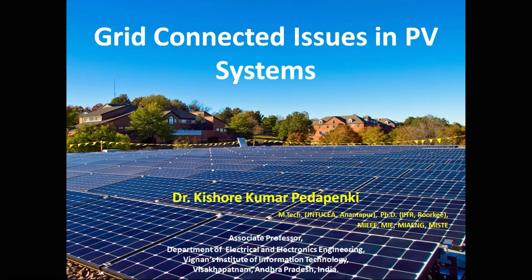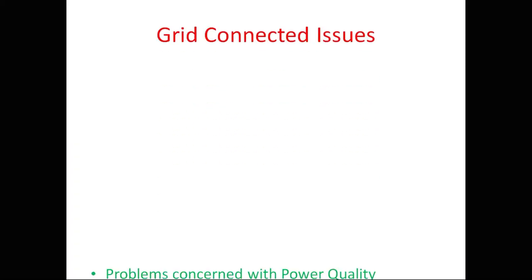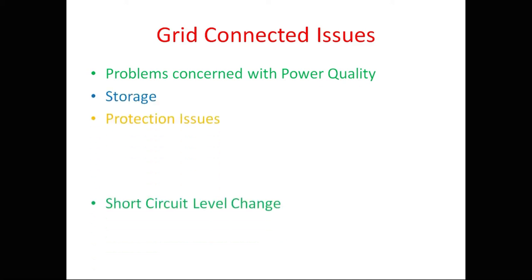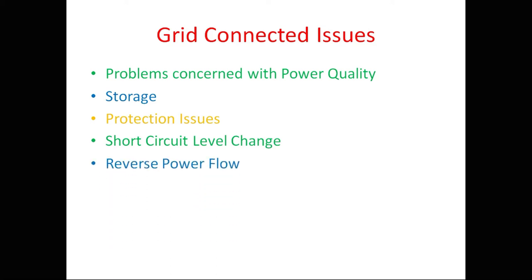In the last class we discussed what is meant by grid-connected PV systems. Now let us see the different issues of grid-connected PV systems — the different problems we may face while connecting our PV system to the electric grid. The main points include: power quality, storage, protection issues (short circuit level change, reverse power flow, lack of sustained fault current), and islanding.